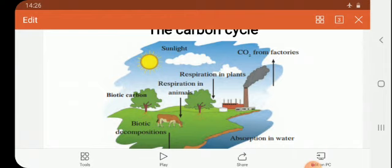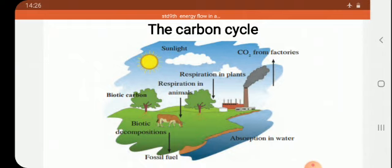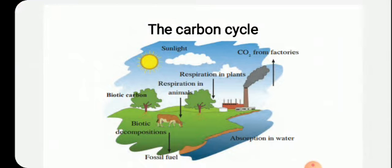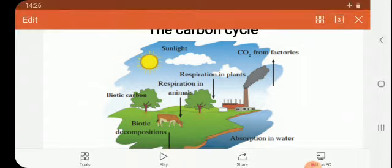Hence we say that the carbon cycle is one of the biogeochemical cycles — biological, earth, and chemical. Biotic components are present in the soil and earth, and chemical substances like carbohydrates, proteins, and fats are involved. That's why the carbon cycle is also said to be one of the important biogeochemical cycles.